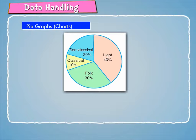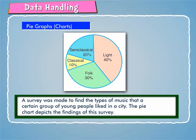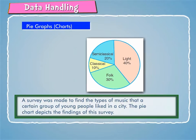Let us take an example to understand this more clearly. A survey was made to find the types of music that a certain group of young people liked in a city. The pie chart in the figure depicts the findings of the survey. From this pie chart, answer the following questions.